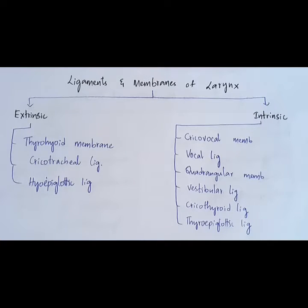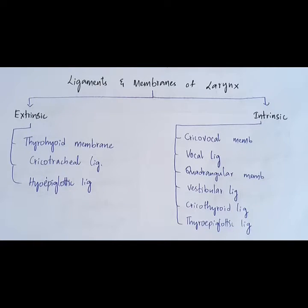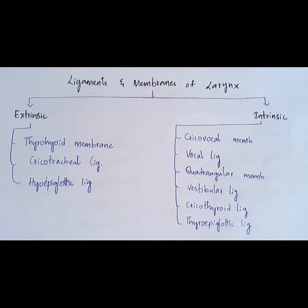Now let's revise the ligaments and membranes of the larynx. There are nine ligaments and membranes of the larynx, broadly divided into extrinsic and intrinsic. In the extrinsic group, you have one membrane and two ligaments: the membrane is the thyrohyoid membrane, and the two ligaments are the cricotracheal ligament and the hyoepiglottic ligament. Remember that the thyrohyoid membrane has a foramen for passage of the superior laryngeal vessels and the internal laryngeal nerve, and in the lateral part has the triticeal cartilage. In the intrinsic group, you have the cricovocal membrane, also called the conus elasticus.